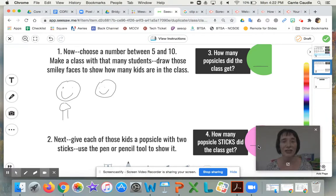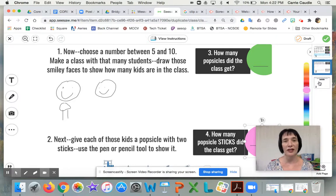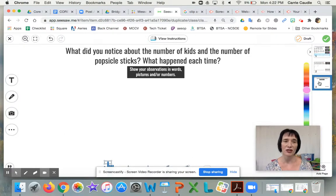Finally, you're going to go right over here to page three and I want you to answer the question: what did you notice about the number of kids and the number of popsicle sticks? What happened each time? And so you can show this using words, pictures, or numbers. So feel free to use this pencil tool to show your words, pictures, or numbers. Use the pen tool and you can do different colors over here to show some words, pictures, or numbers.